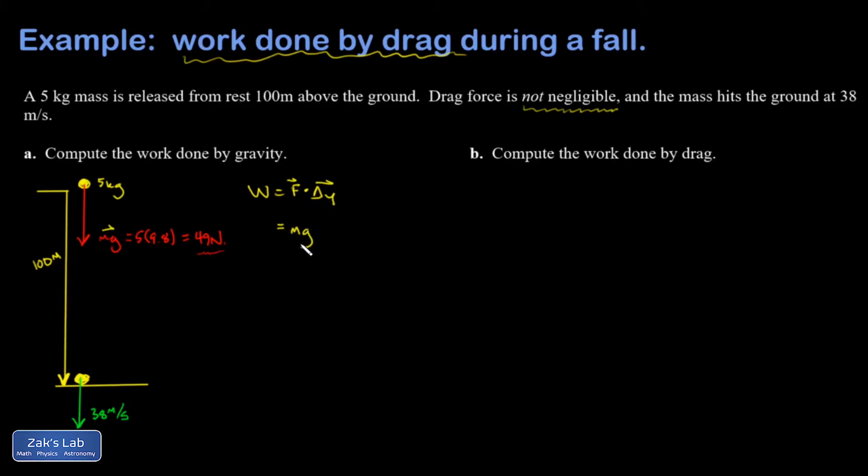Sometimes it's difficult to back up one step. All right, mg times maybe what I'll call h just so I can do it symbolically, and then that's going to be 5 kilograms, 9.8 meters per second squared, 100 meters. Smash all those numbers together, 5 times 9.8 times 100, and I get 4900 joules.